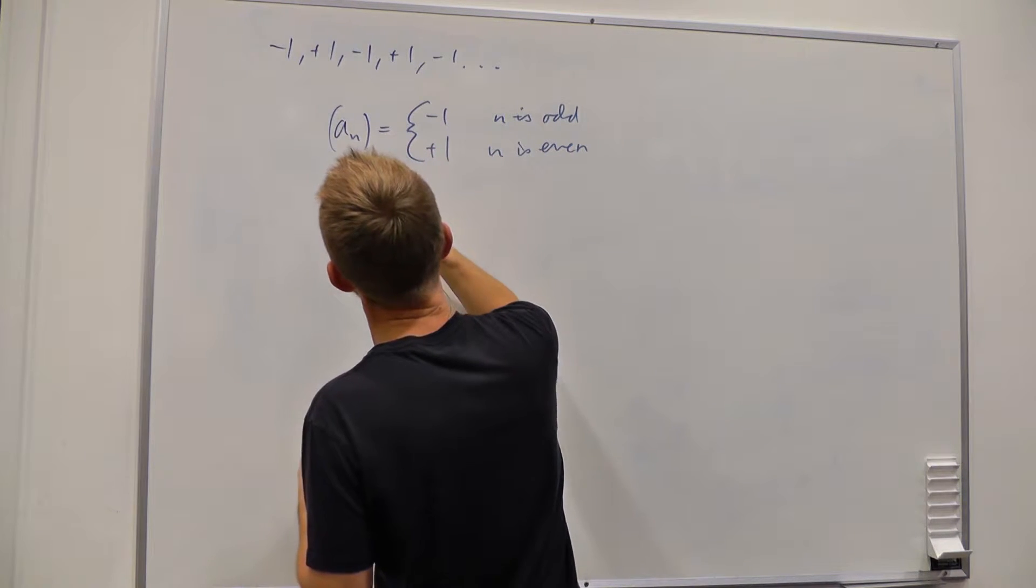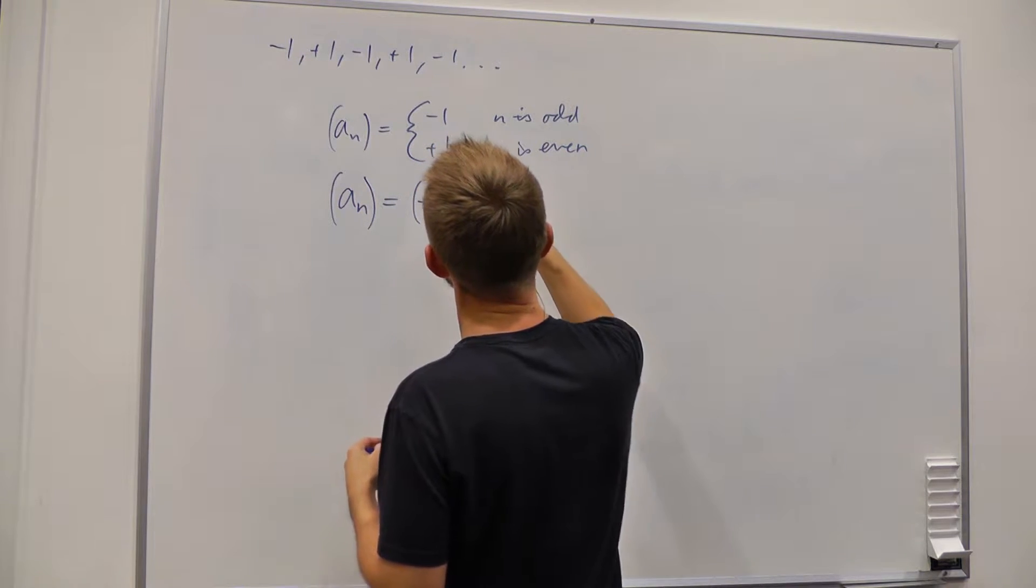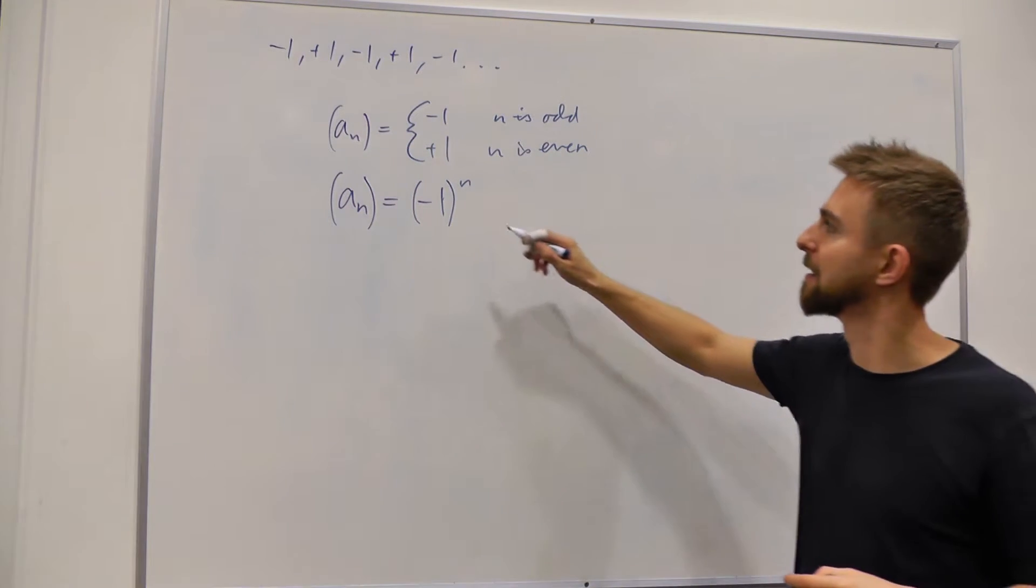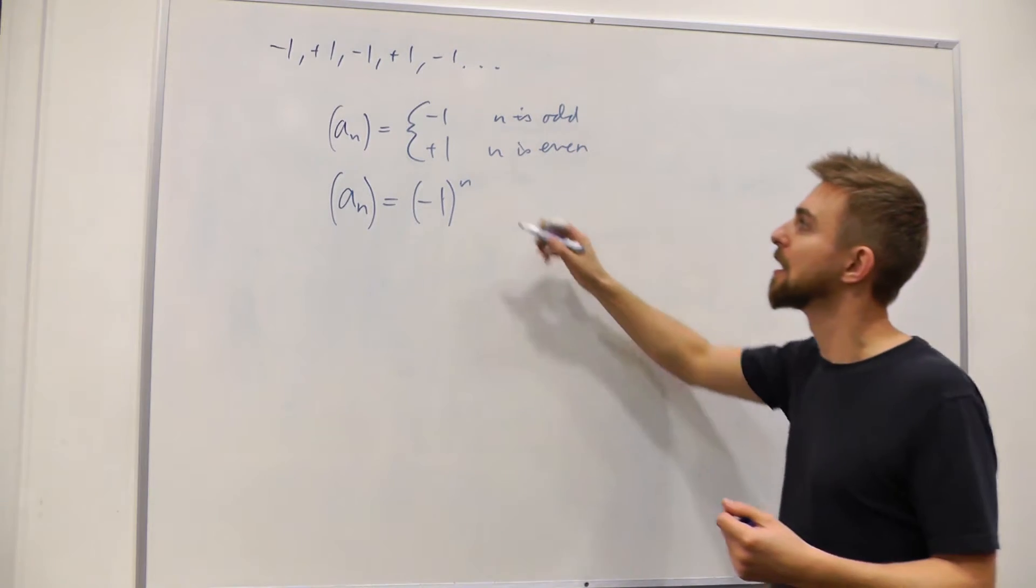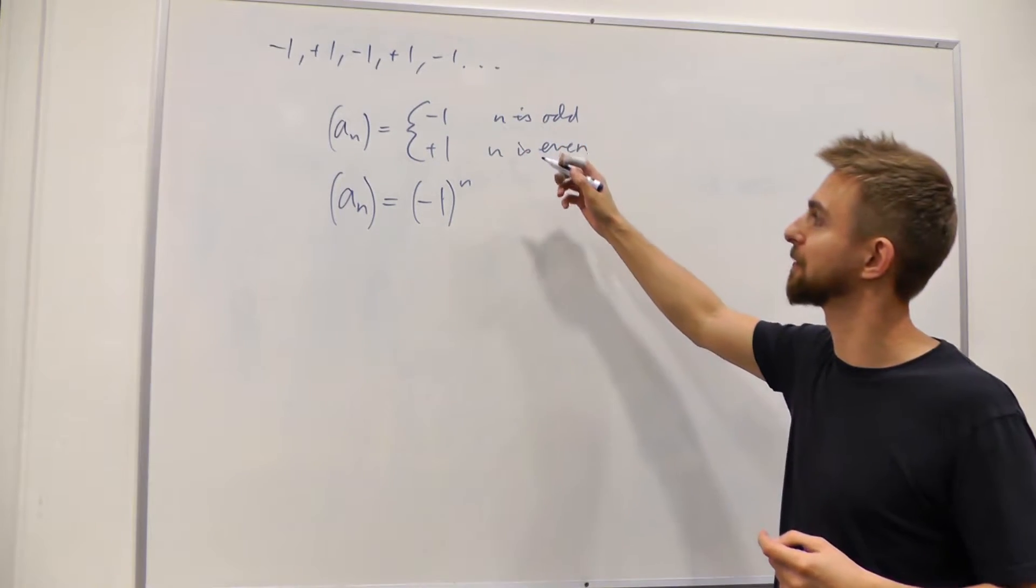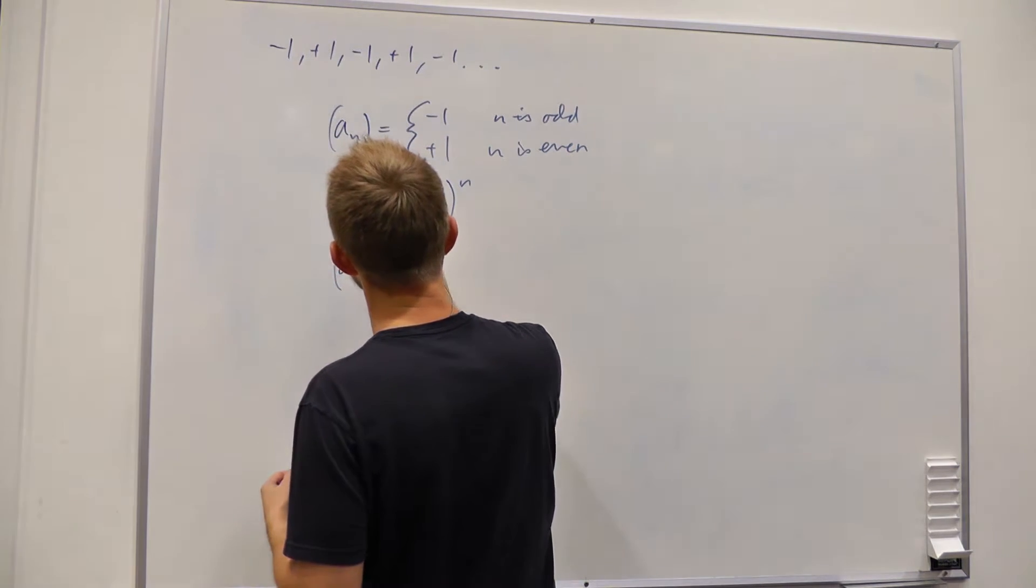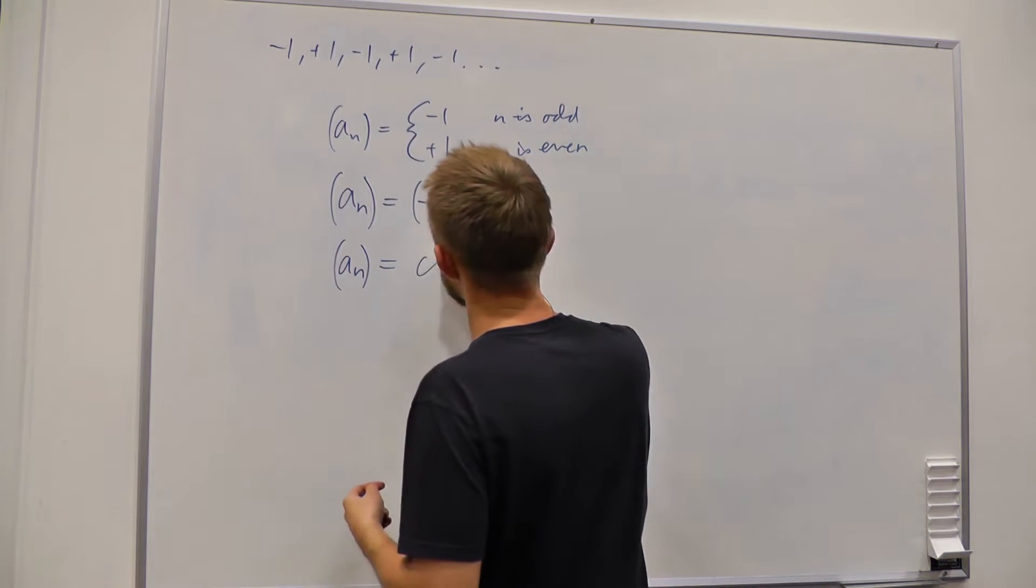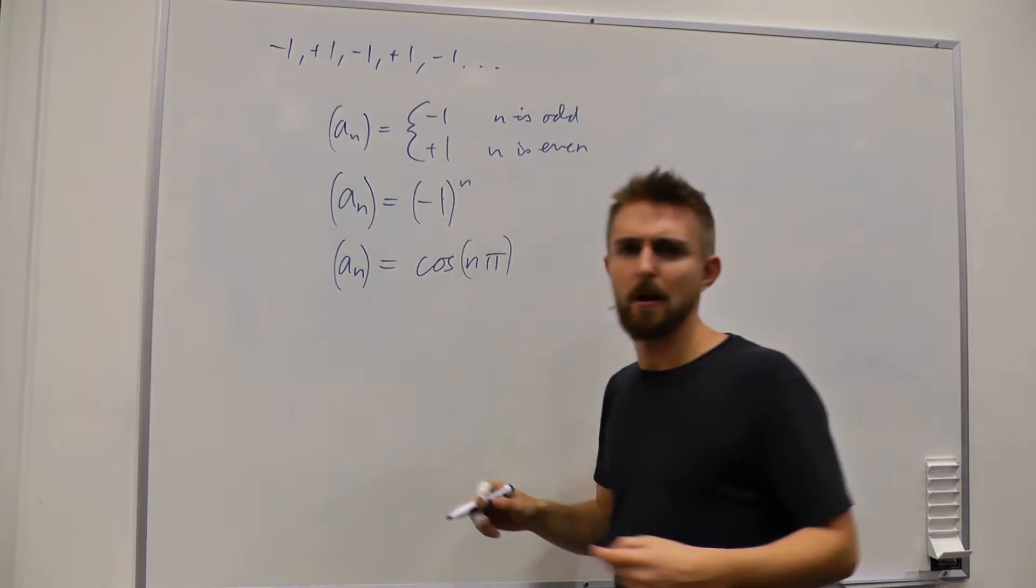It's going to be minus 1 when n is odd, and plus 1 when n is even. It's a very sort of literal way of writing this down. Equally, we could write it like this. We could say it's much more succinct. We could say, well, it's just minus 1 to the power of n. Clearly, minus 1 to the power of 1 is just minus 1, but any even exponent is going to cause that minus sign to disappear and make it positive. Again, we could write this in a slightly more convoluted way, and say, okay, well, it's just cos of nπ.